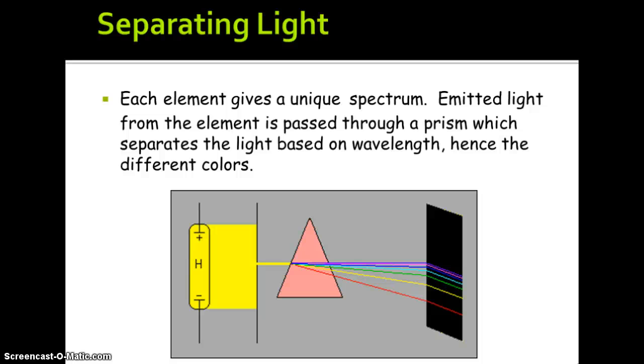Separating light: each element gives a unique spectrum. Emitted light from the element is passed through a prism which separates the light based on wavelength. Hence, your different colors.